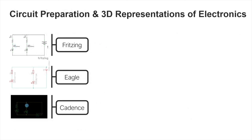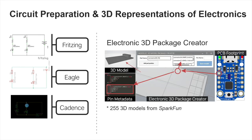The first step is to create a library of 3D representations of components. We developed Modelag to support three existing third-party EDA tools: Fritzing, Eagle, and Cadence. We also created a little tool for the user to customize the 3D models for the electronics, and they can configure the pin information in the tool so that we can read the information in our Modelag tool.